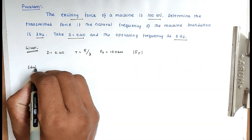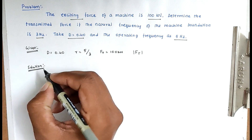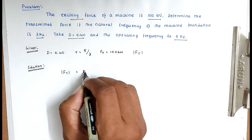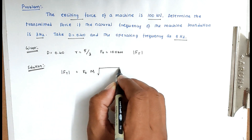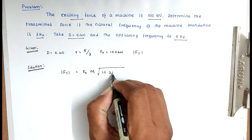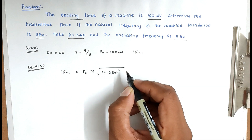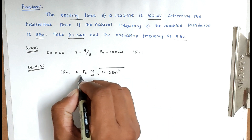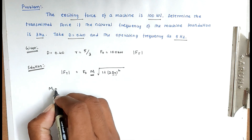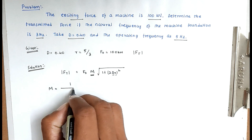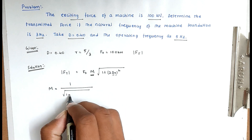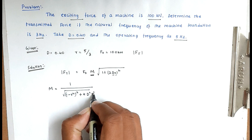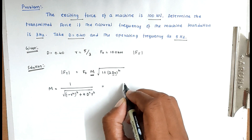Now the solution. Ft equals F₀ into M into root of (1 plus 2 d r) squared. This is the formula. From that we have to find the M value. We know the d value, r value, and F₀ value. M equals 1 divided by root of (1 minus r squared) whole squared plus 4 into d squared into r squared. This is the formula; we can substitute all the values.